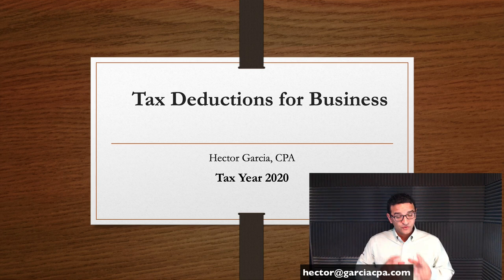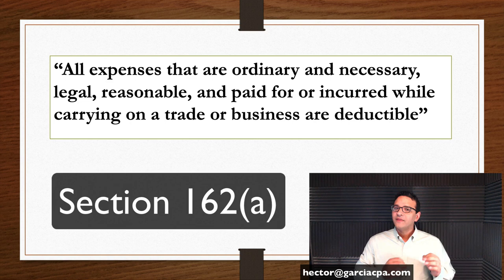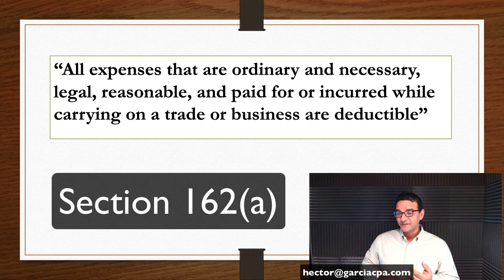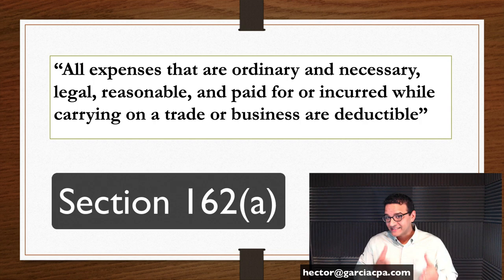Section 162A of the tax code specifically talks about trade or business deductions. And it basically says — paraphrased — all the expenses that are ordinary, necessary, legal, reasonable, and paid or incurred while carrying on a trade or business are essentially deductible.